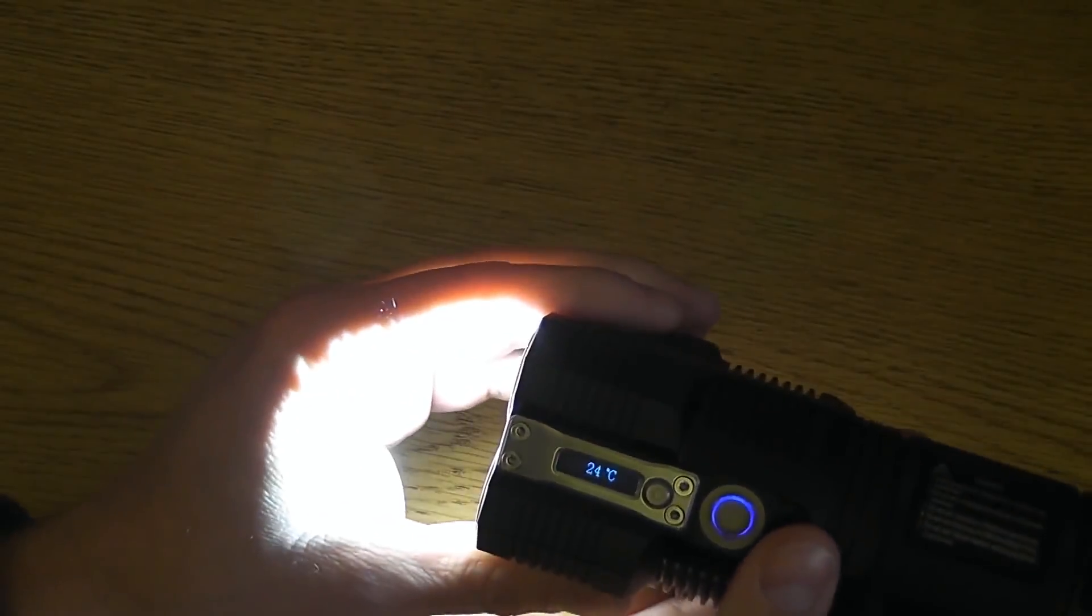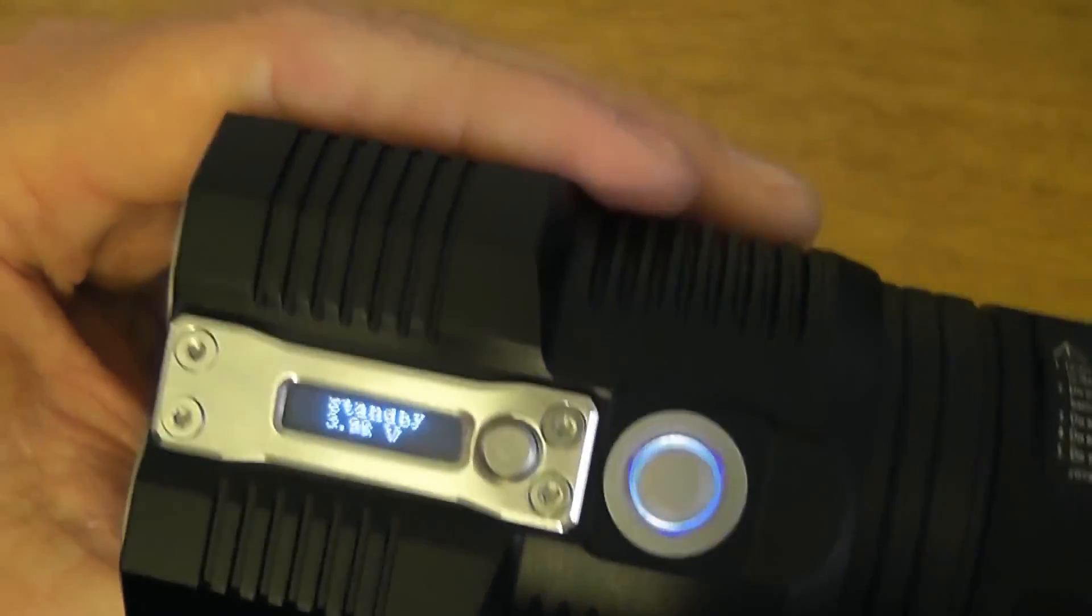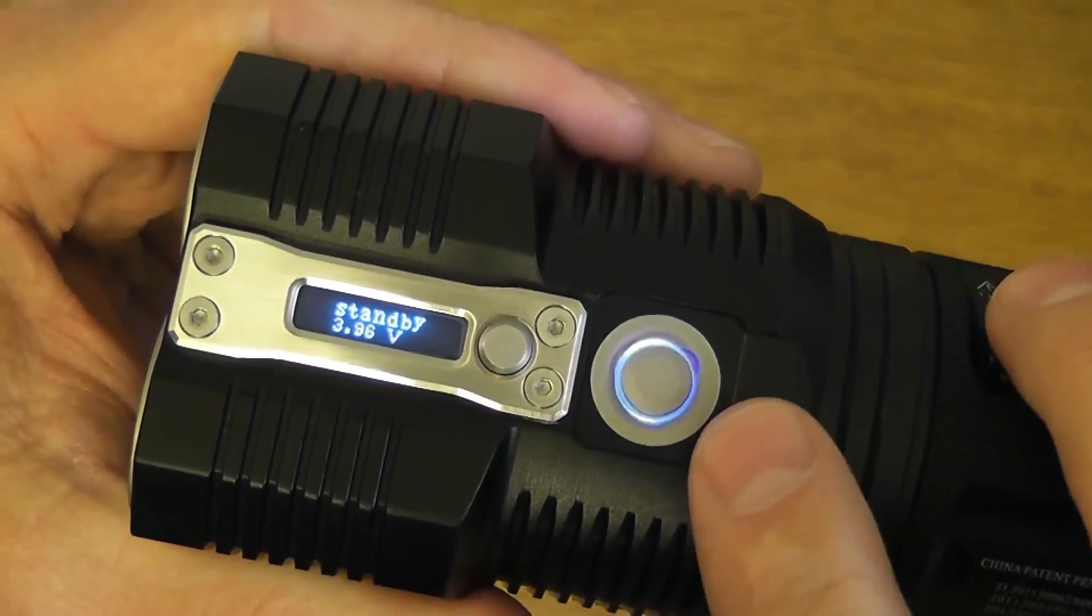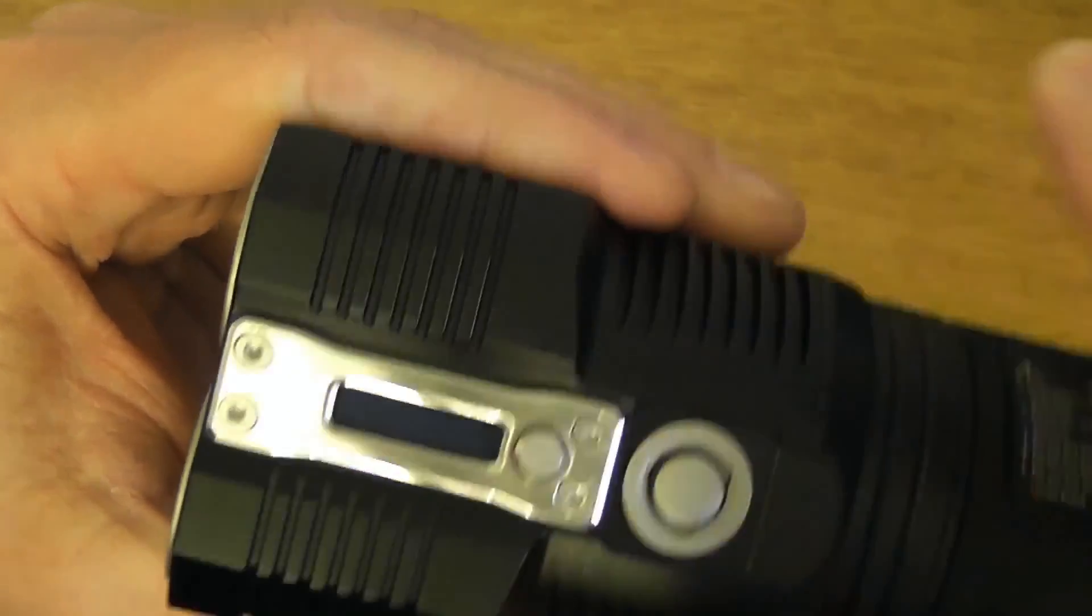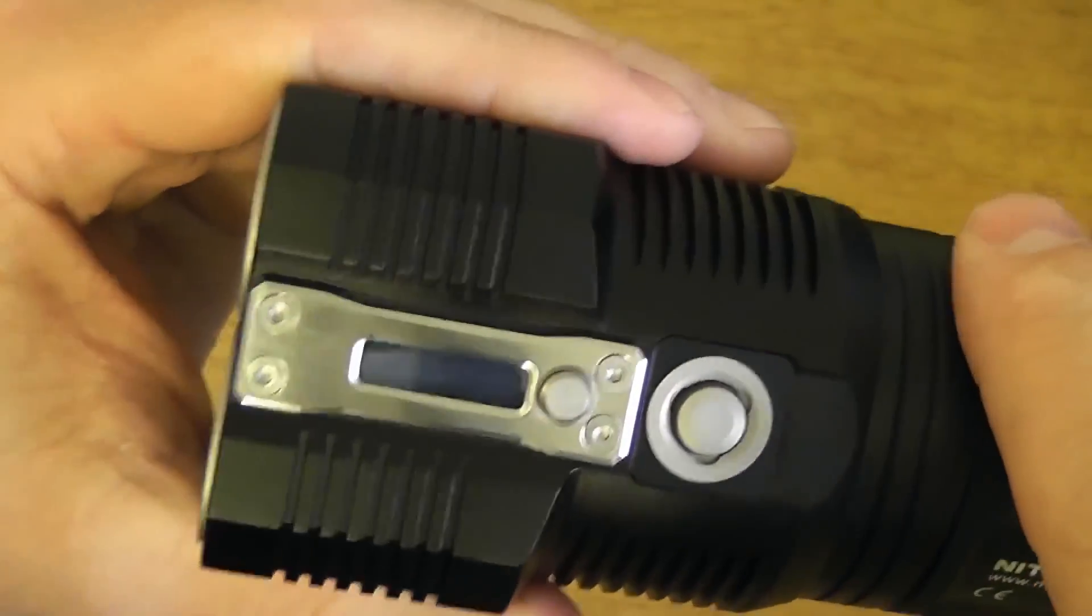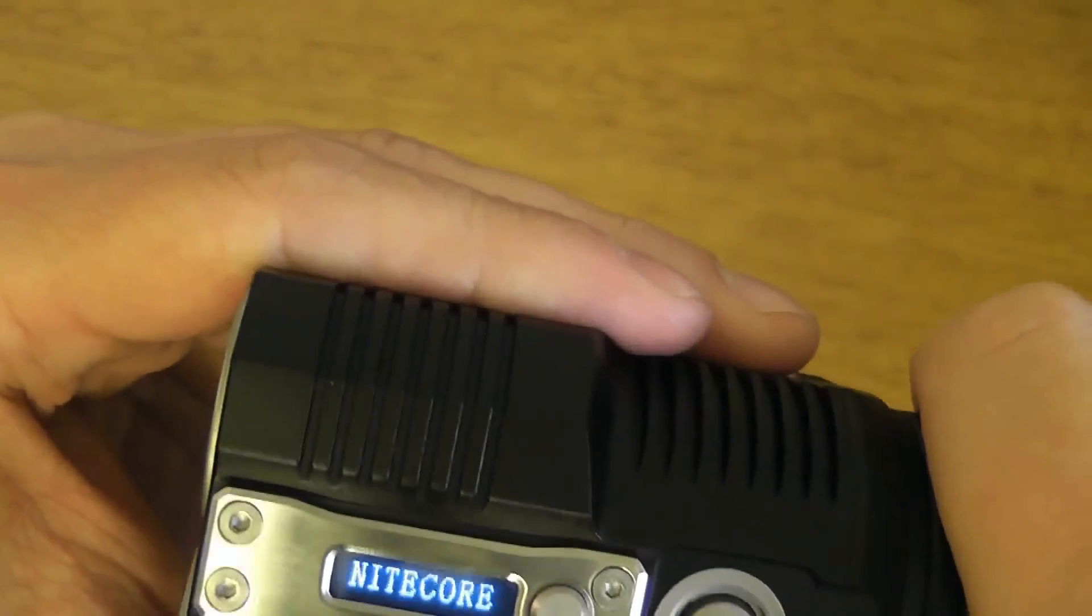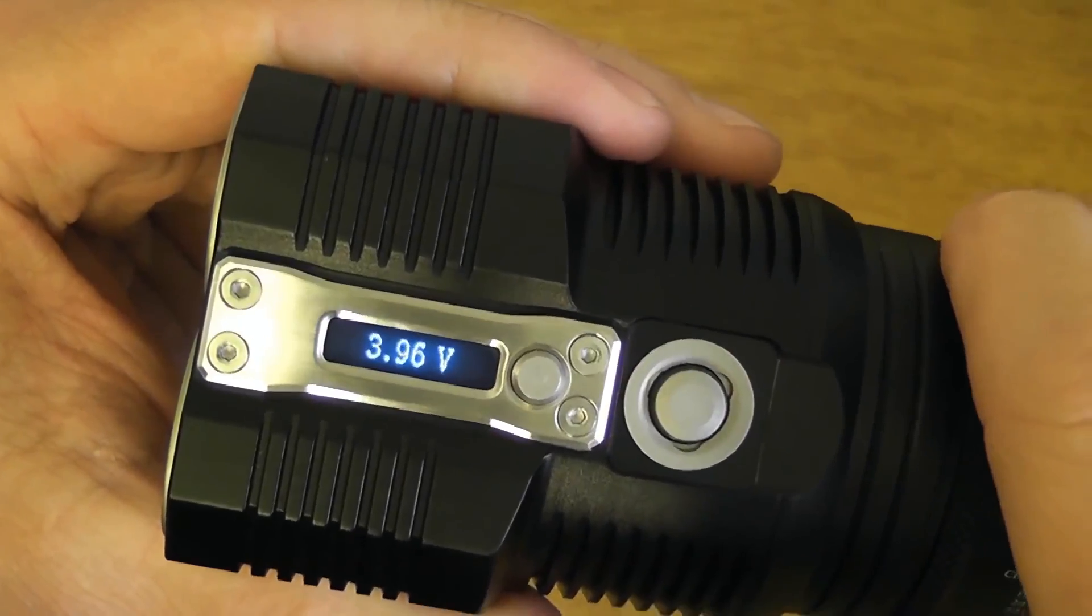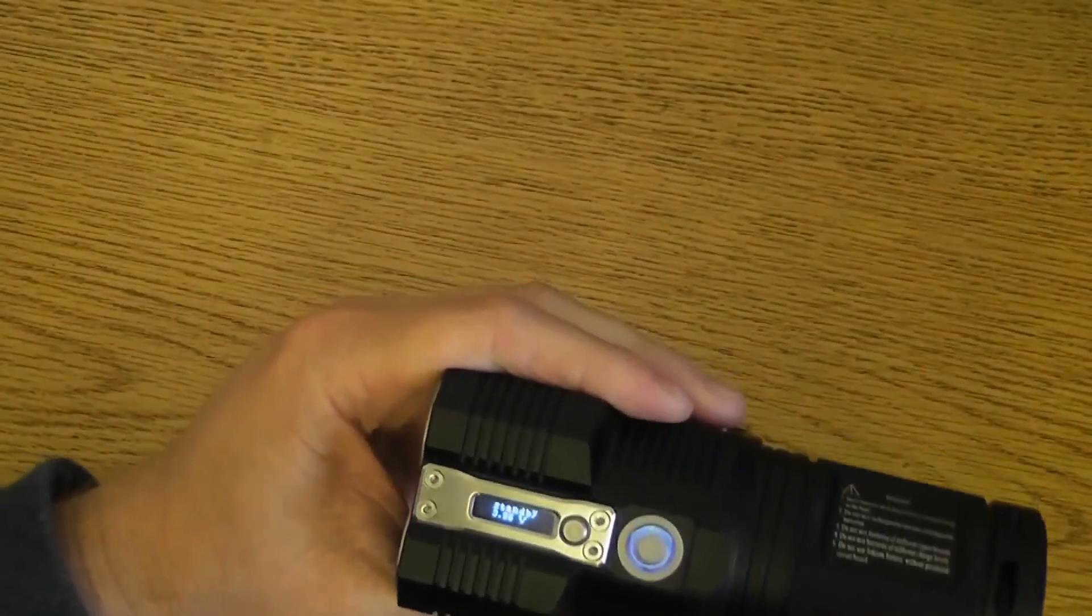Alright, to shut the light off from any of the daily modes, full press and let go. And it enters standby mode. The light is never really off. It's in standby mode. You can see this blinks every three seconds or so. This will shut off after 10 seconds, which it just did. If I disconnect the battery tube, that actually shuts the light off completely. But when I screw it back in, you'll see Nitecore displayed. And now it's back in standby mode.